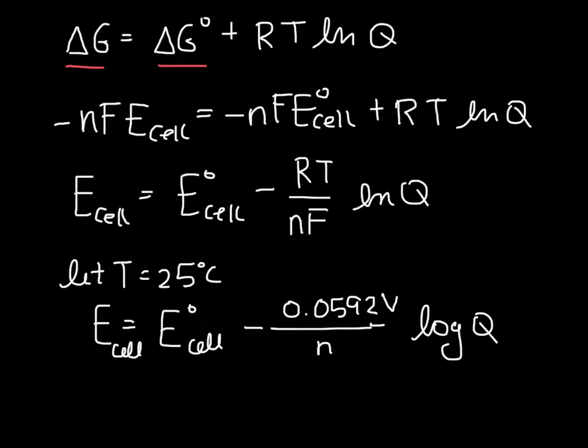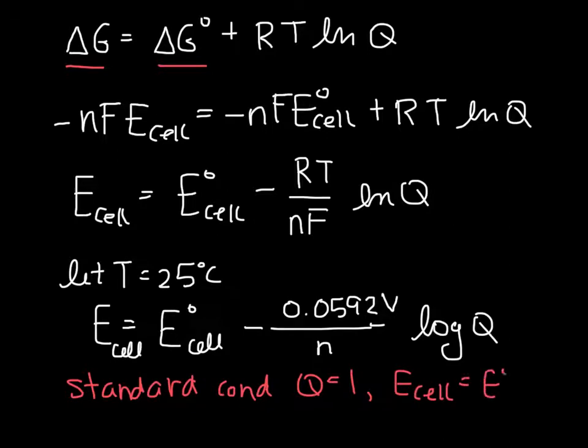This is the Nernst equation, and this is the simplified Nernst equation. We can see that this gives us back what we expect for the standard conditions, because in the standard conditions, Q equals 1 since all of those activities are 1, and so we find that the cell potential is just equal to the standard cell potential.